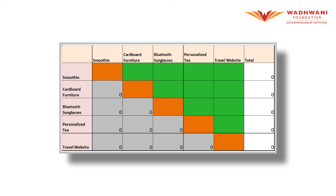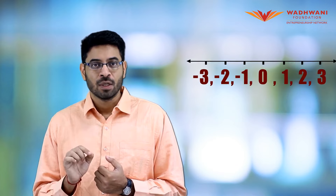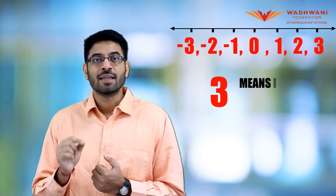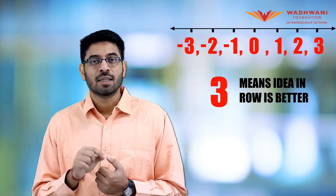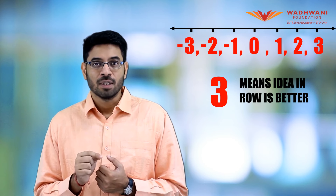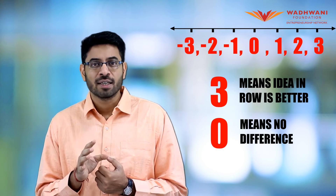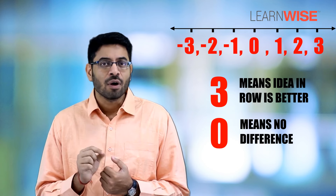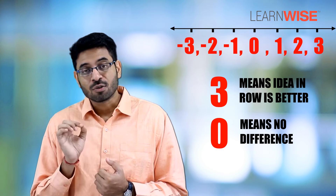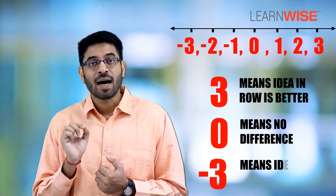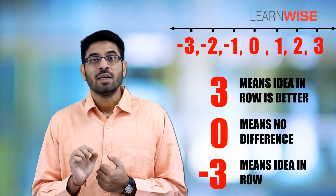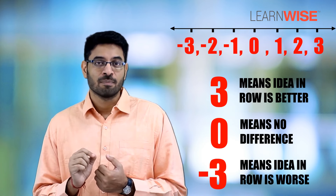Remember, the score is for the idea on the horizontal row, and you assign a value from minus three to three. A score of three means the idea in the horizontal row is much better than the idea in the vertical column. A score of zero means there is not much of a difference in quality between the two ideas. A score of minus three means the idea in the horizontal row is much worse than the idea in the vertical column.